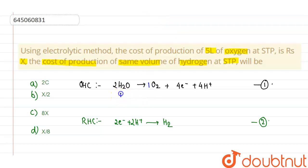So from the first reaction, we can say that 1 mole of oxygen, 4 electrons are needed. So we can say 1 mole of oxygen production requires 4 Faraday's of electricity. So N moles will require, N moles of oxygen will require 4N Faraday's of electricity.